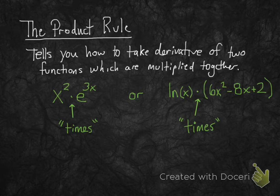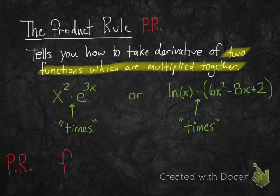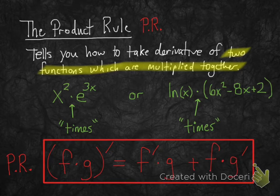You're going to use the product rule when you have two functions multiplied together — we're going to abbreviate this PR for product rule. Here's what it is in symbols: you want to take the derivative of two functions, f times g, and I'll explain the formula on the next slide.